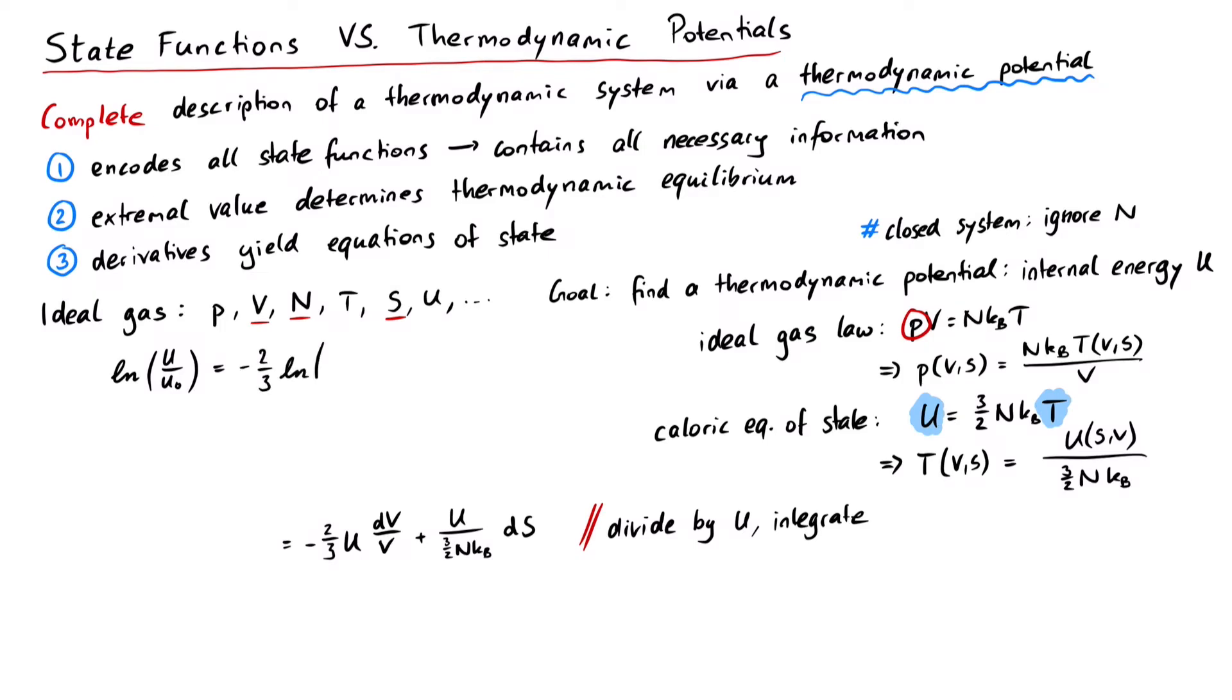On the right, the integration with respect to volume also gives us a logarithm, and the integration with respect to entropy gives us the difference of entropy minus a reference value. By rearranging the equation and using the exponential function, we get U equal to u0 times V0 divided by V to the power of 2 thirds times e to the S minus S0 divided by 3 halves nKB. This is the thermodynamic potential U for an ideal gas.